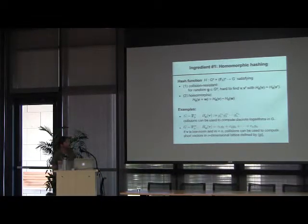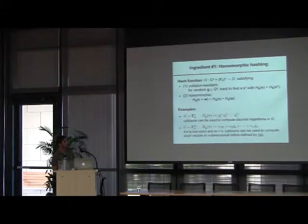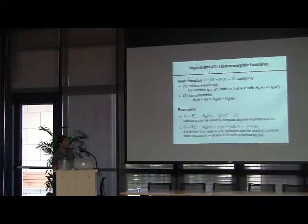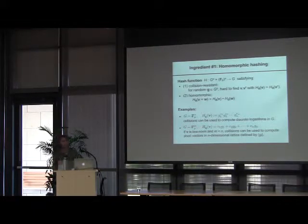The p's in these two constructions differ: in the first discrete log construction, p must be very large — exponential size. In the second lattice construction, p can be polynomial in n.